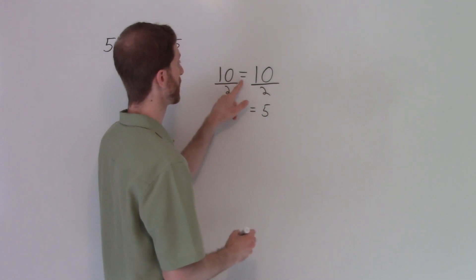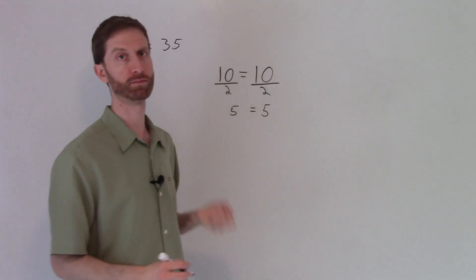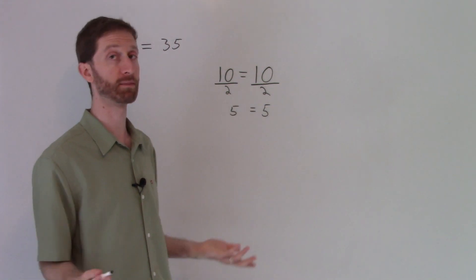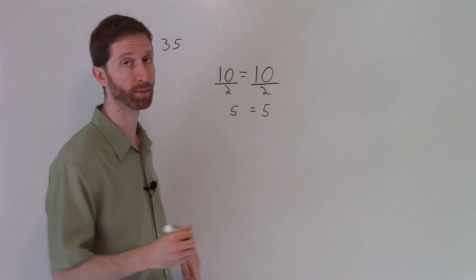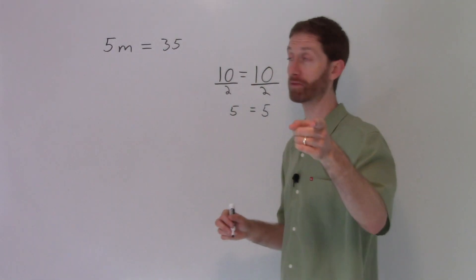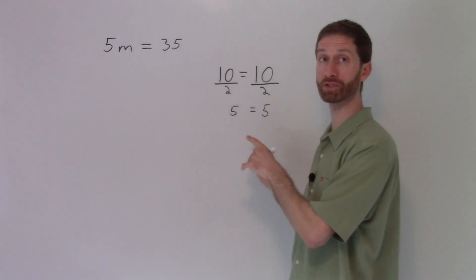So you could also have shown that with a division sign, 10 division by two, 10 division by two. It means the same thing. I like to use this fraction bar. It's going to come in handy as we do out problems over here. So that is the division property of equality. Very simple stuff.